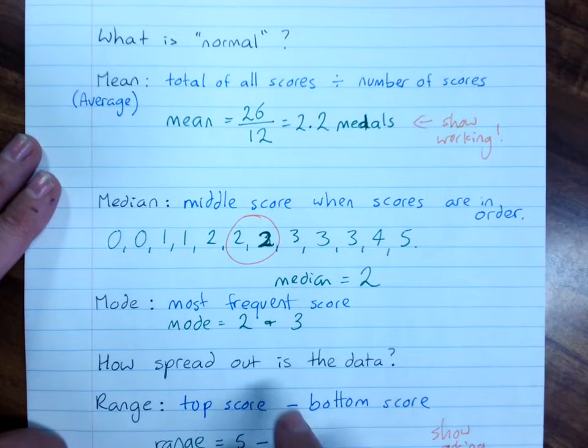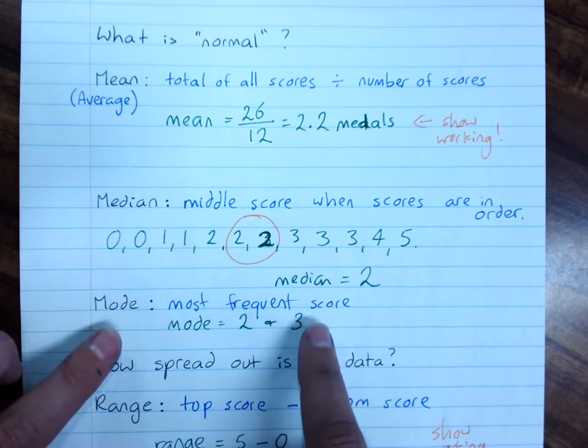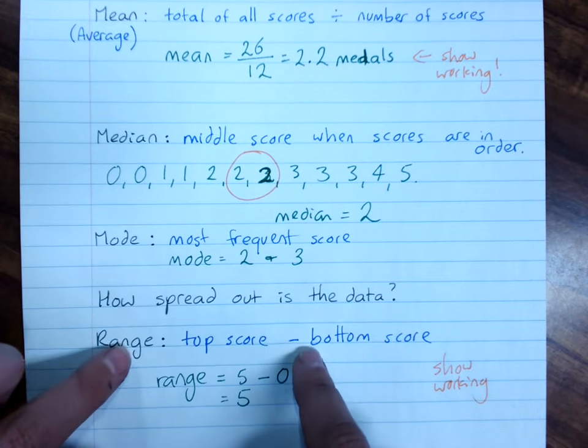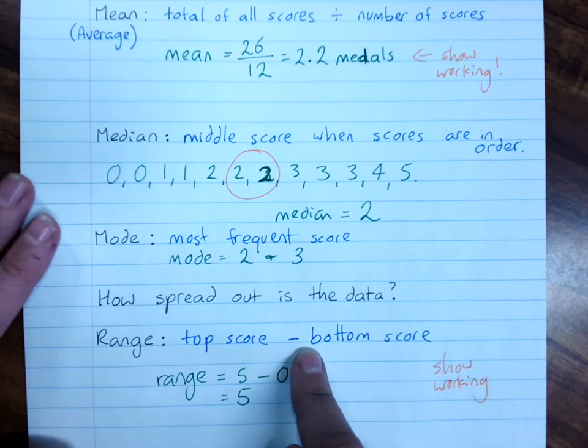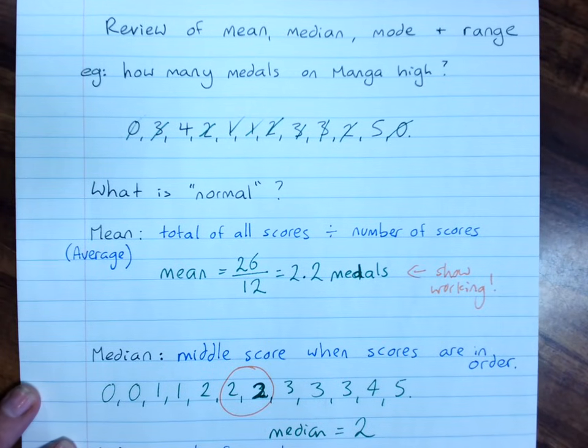So you'll see, we absolutely have to put our data in order for the median. And when it's in order, that's really useful for getting the mode and the range as well. That is the mean, median, mode, and range.